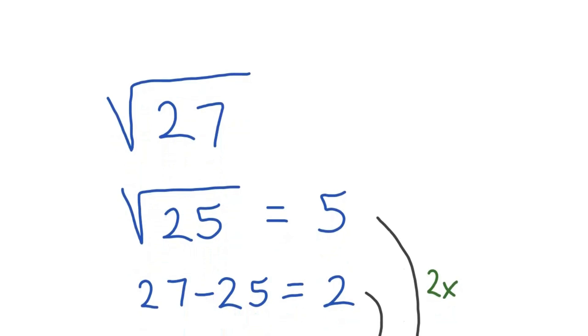Now what we're going to do is find the difference between this number, 27, and this number, 25. That is 2. That is literally all the information we need to find the answer to square root 27.